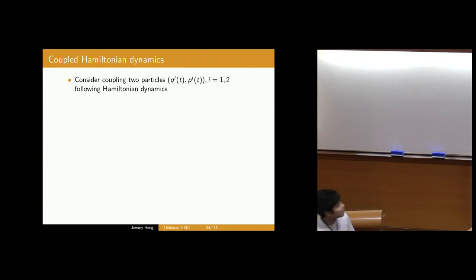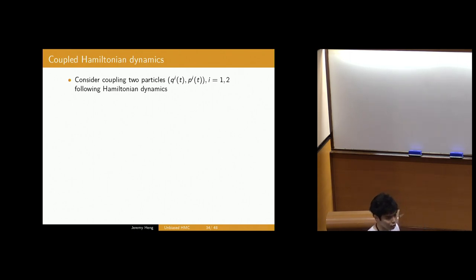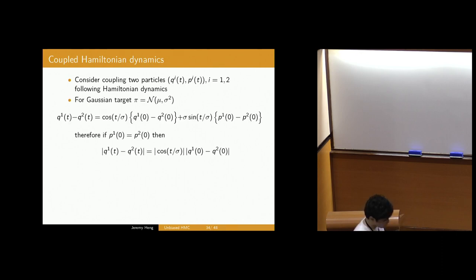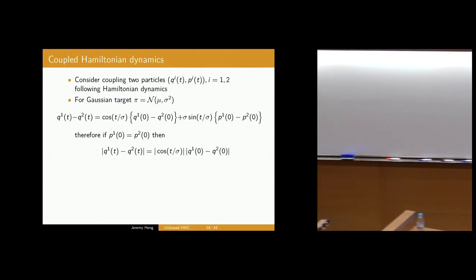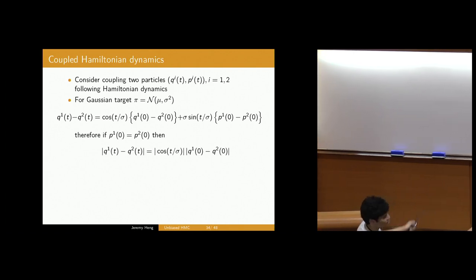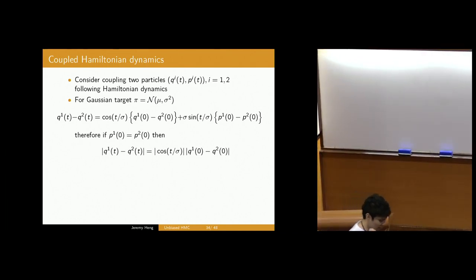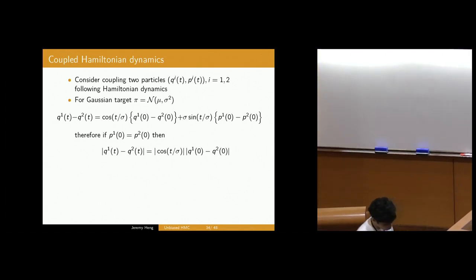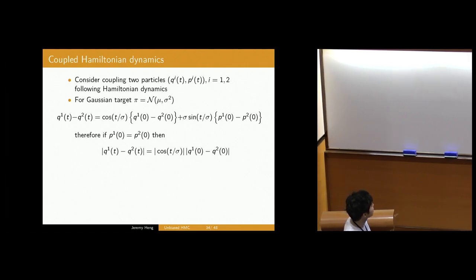Let's go back to continuous time and think about coupling two particles undergoing Hamiltonian dynamics, indexed i equals 1 and 2. For a standard Gaussian in 1D, you can compute the difference between the positions of the two particles. If you set the initial momentum to be the same — killing one term — you get an expression showing that for many times you get contraction because of the cosine, and for different integration times t you may get more or less contraction.